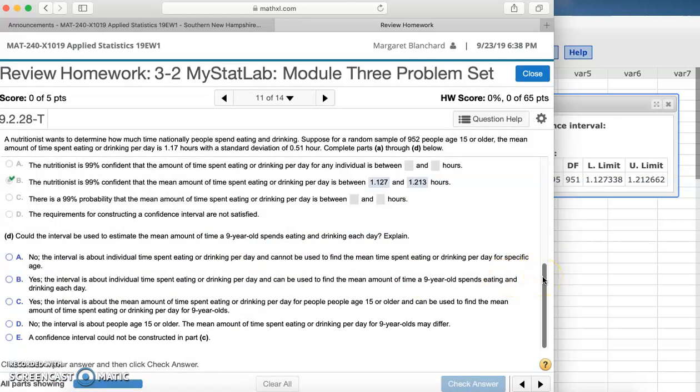All right, Part D. Could the interval be used to estimate the mean amount of time a nine-year-old spends eating or drinking each day? Explain. Well, let's go back up here. Our sample, it says, suppose for a random sample of 952 people of age 15 or older, that already tells us that nine-year-olds were not considered in this survey at all or this sample. So no, we can definitely not use this interval to estimate anything with a nine-year-old.